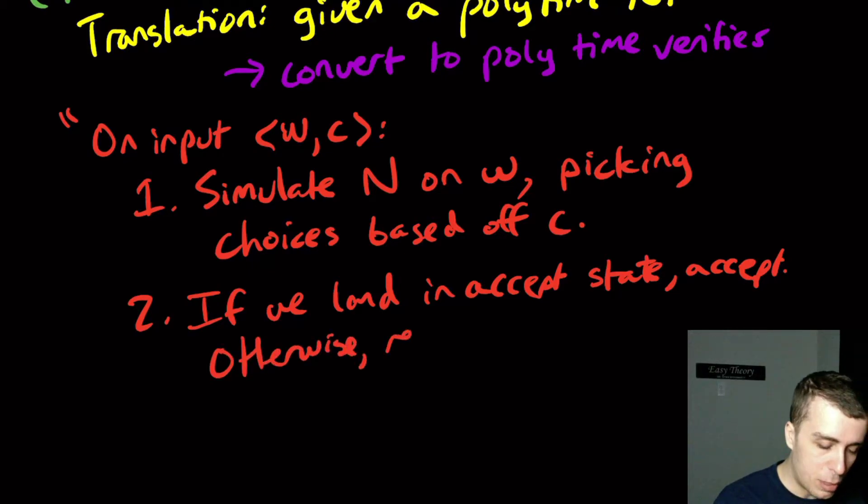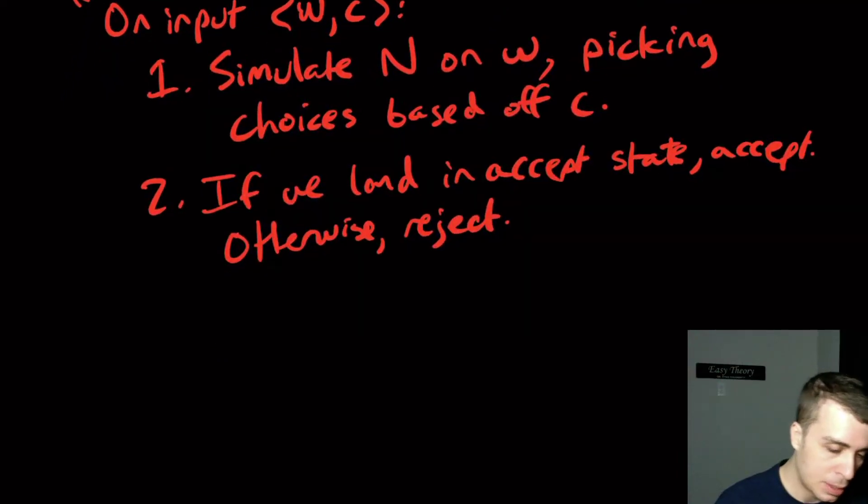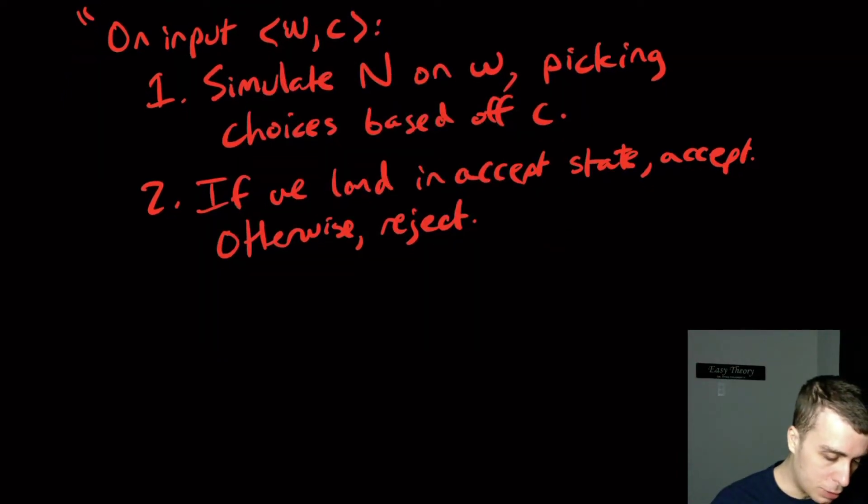So we're not focused on figuring out what the choices are. We're already given the choices, so to speak, that's what the certificate is encoding. The certificate could encode other things, but here we're purposely making it so that the certificate is encoding the actual transition choices that are made in the non-deterministic machine. So then now for the other direction, which says that NP star is a subset of NP.